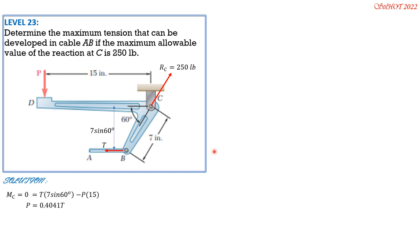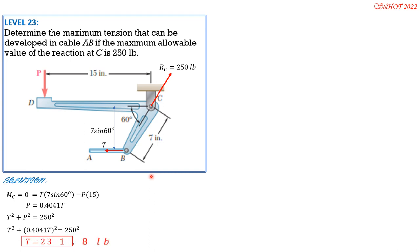So P = 0.4041 T. With the allowable reaction at C being 250 pounds: 250² = T² + P². Substituting: T² + (0.4041 T)² = 250². Solving for T: T = 231.8 pounds.